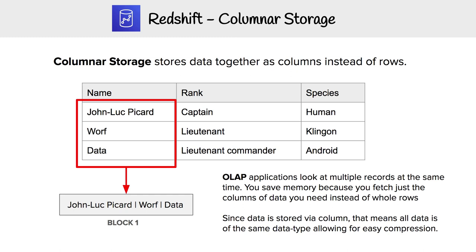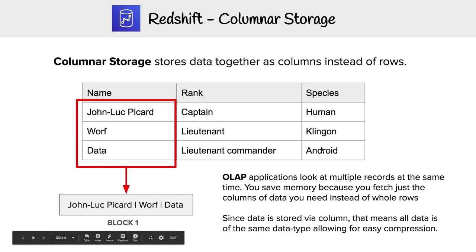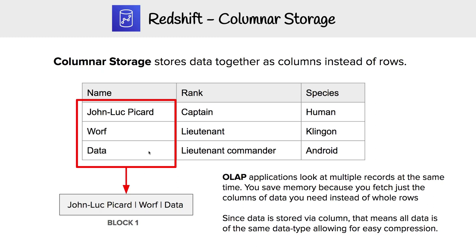Columnar storage is very important to Redshift's performance. With a traditional database you read via rows, whereas with OLAP you're reading via columns. When crunching large amounts of data, reading by columns allows the same data type to be stored sequentially, enabling easy compression and faster data loading. Because we're always looking at massive amounts of data, we can pull in only the columns we need in bulk — giving us much faster performance for business intelligence use cases.